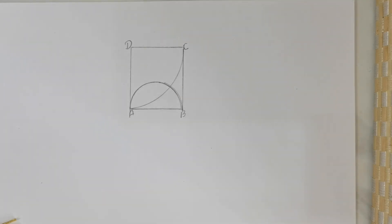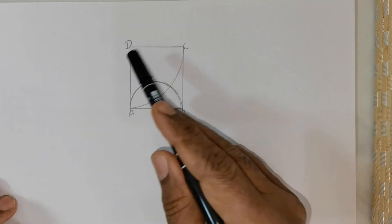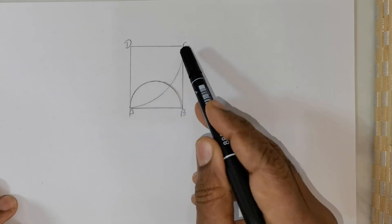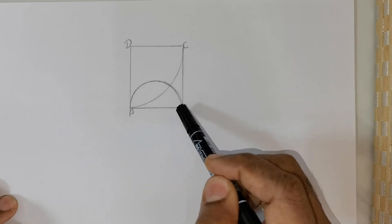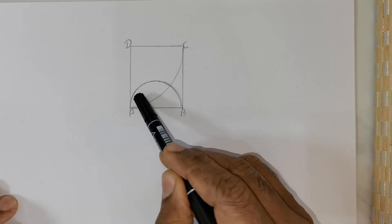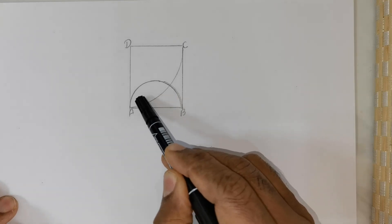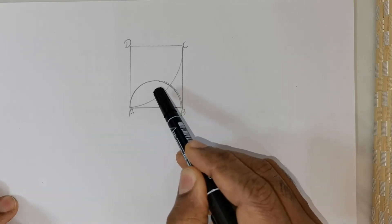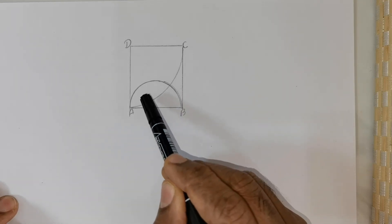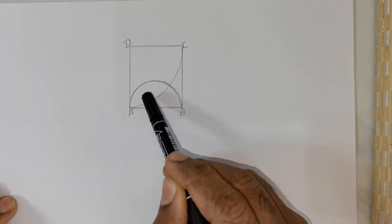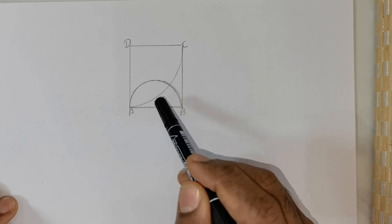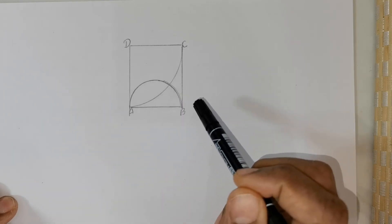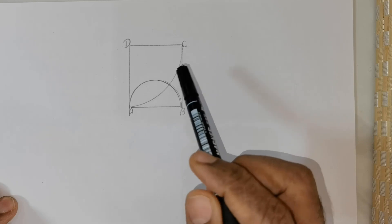Good day everybody, we got an interesting question. We have a square, inside the square there is a quarter circle and a semicircle. We are expected to find the area of a particular region. This is a viral question asked to middle school students in China.